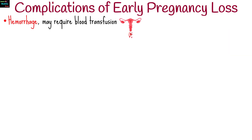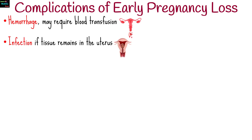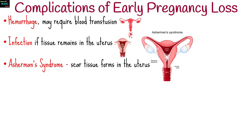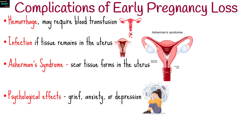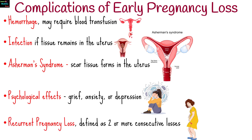Possible complications of early pregnancy loss include hemorrhage, which may require blood transfusion; infection, particularly if tissue remains in the uterus; Asherman's syndrome, where scar tissue forms in the uterus after surgical evacuation; psychological effects such as grief, anxiety, or depression; and recurrent pregnancy loss, defined as two or more consecutive losses, which warrants further evaluation.